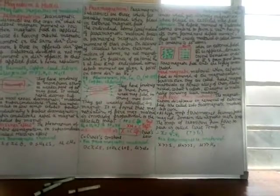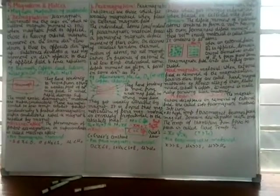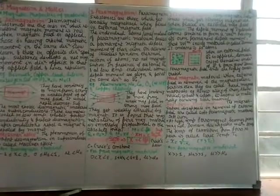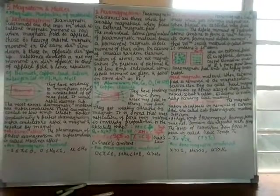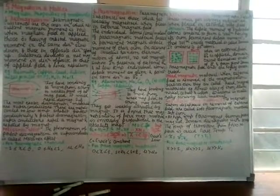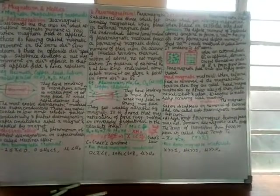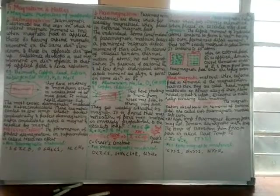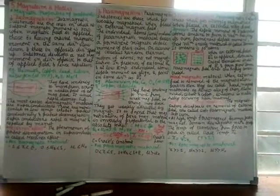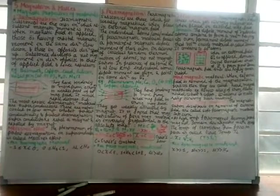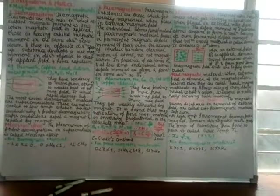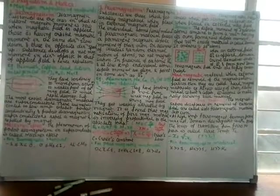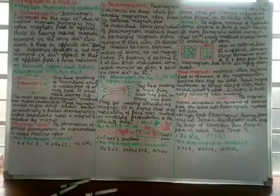We have completed ferromagnetism and next we shall do the hysteresis curve. So we have completed the magnetic properties of materials: first diamagnetism — gets magnetized in the opposite sense; paramagnetism — gets weakly magnetized in the same sense; and ferromagnetism — gets strongly magnetized. Thank you very much.